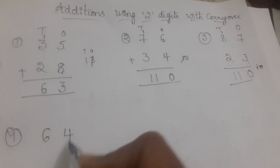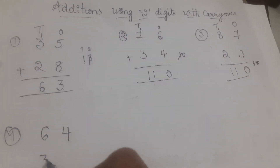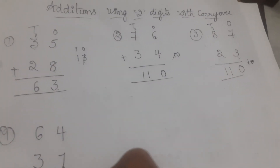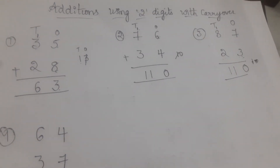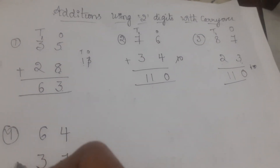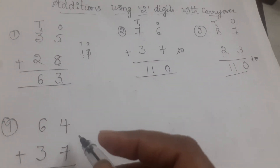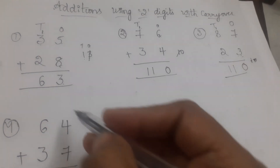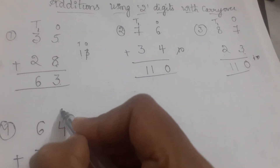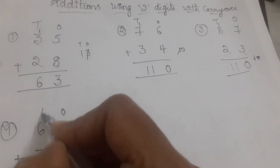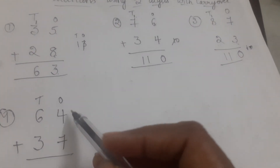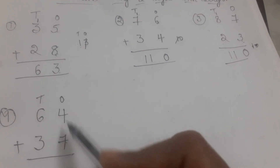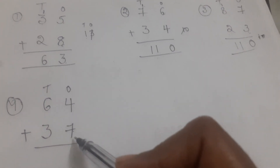Next, fourth one is 64 and 37. First you have to add 64 with 37. In these two numbers, seven is bigger than four, so you have to keep seven in mind.